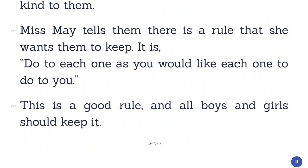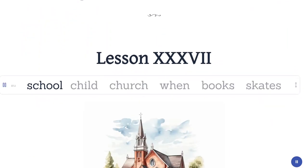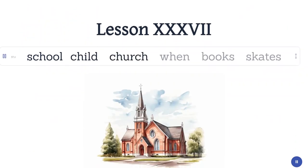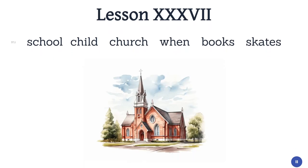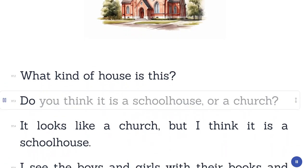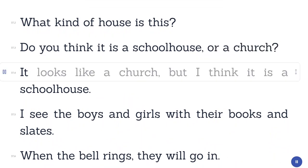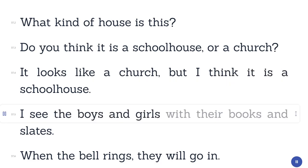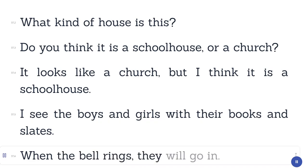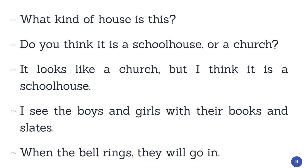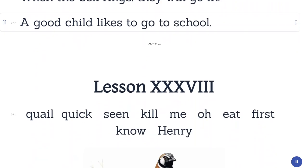Lesson 37. School. Child. Church. When. Books. Slates. What kind of house is this? Do you think it is a schoolhouse or a church? It looks like a church, but I think it is a schoolhouse. I see the boys and girls with their books and slates. When the bell rings, they will go in. A good child likes to go to school.